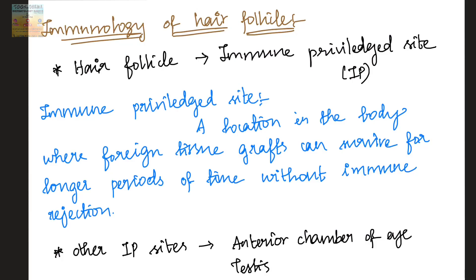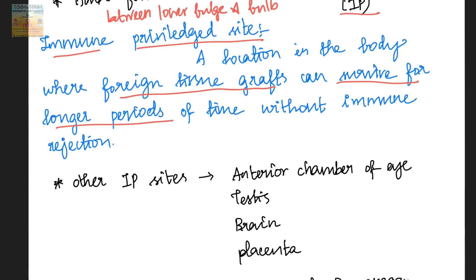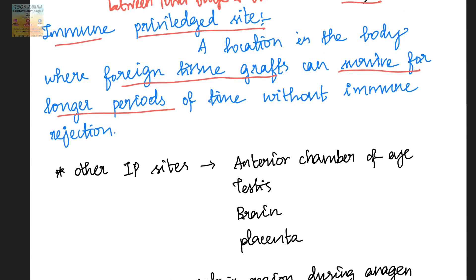In this video we are going to see about the immunology of hair follicle. The hair follicle is found to be an immune privileged site, mainly the region between the lower bulge and bulb of the hair follicle. An immune privileged site is a location in the body where foreign tissue grafts can survive for longer periods of time without immune rejection. Other immune privileged sites in our body are the anterior chamber of the eye, testes, brain, and placenta.